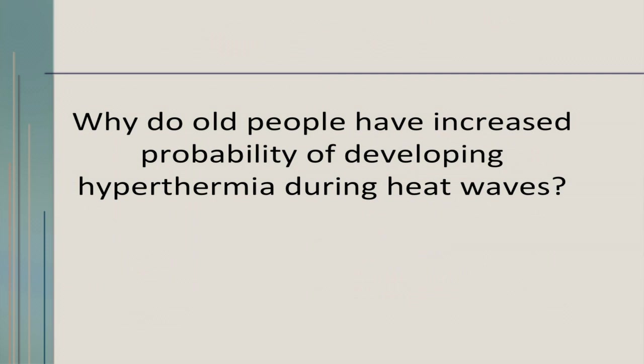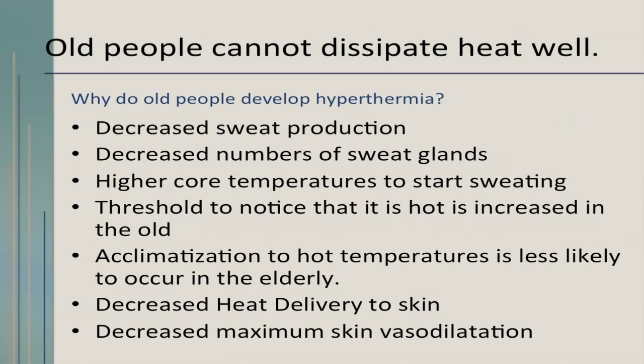Why is there an increased probability of developing hyperthermia for older patients? They can't dissipate heat in the same way as when they were younger. Sweat production has decreased, the number of sweat glands has decreased, and it takes higher core temperatures to start sweating. The threshold to recognize it's too hot is increased in older people — so they're less likely to acclimatize. Their skin cannot vasodilate in the same way to dissipate the heat, leading to more hyperthermia.